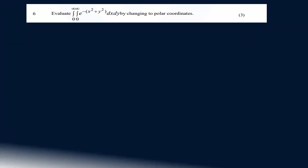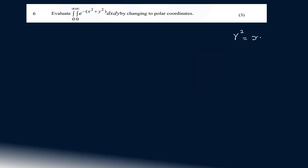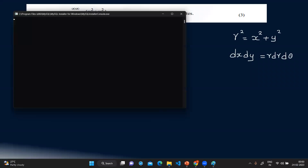Evaluate the integral from 0 to infinity, integral 0 to infinity, of e raised to minus of x square plus y square, dx dy, by changing to polar coordinates. We will convert to polar coordinates. r square is equal to x square plus y square, and dx dy becomes r dr dθ.